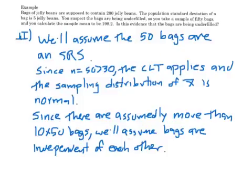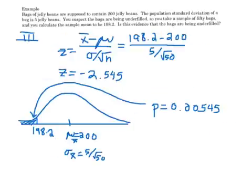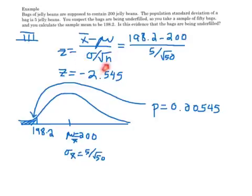Step two is the conditions. The good news is these conditions are exactly the same as with confidence intervals. We'll assume the bags are an SRS. Since n is greater than 30, the CLT applies. Since there are at least 10 times 50 bags, we'll assume independence. Absolutely no difference from confidence intervals. Now here's the big difference — the formula is different. We calculate a z-score: X-bar minus mu over the standard deviation. This is the standard deviation of X-bar. We calculate a z-score of negative 2.54.